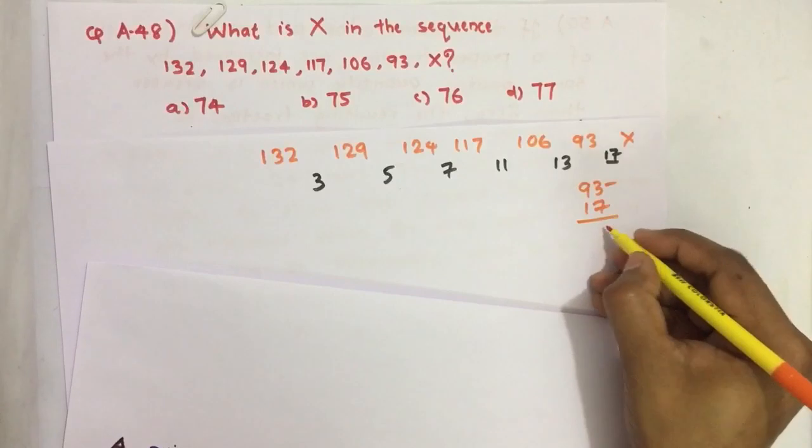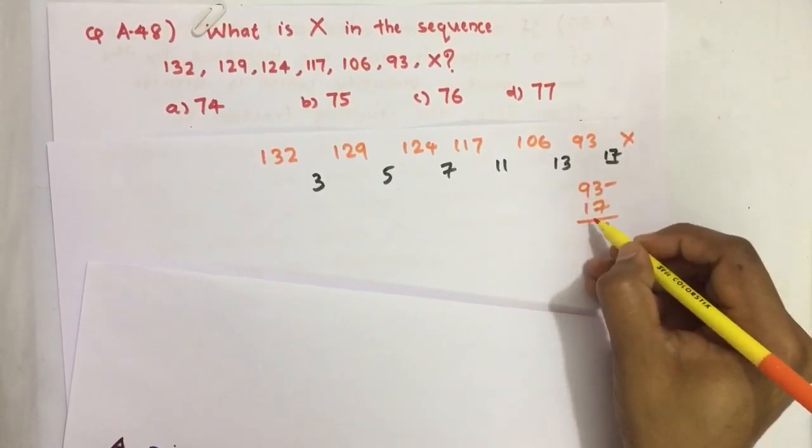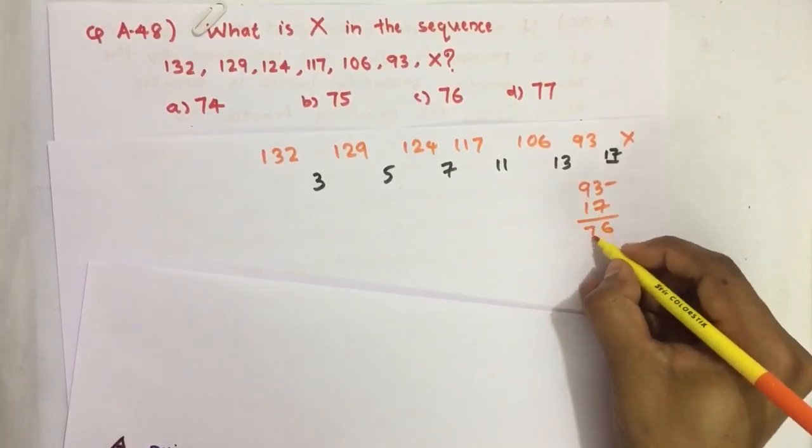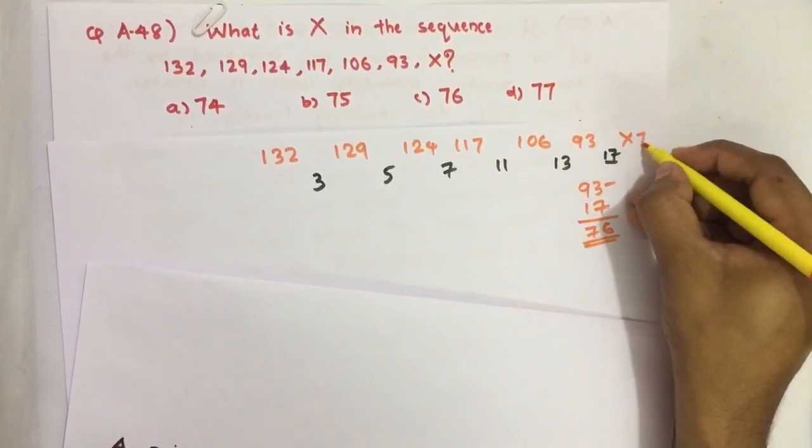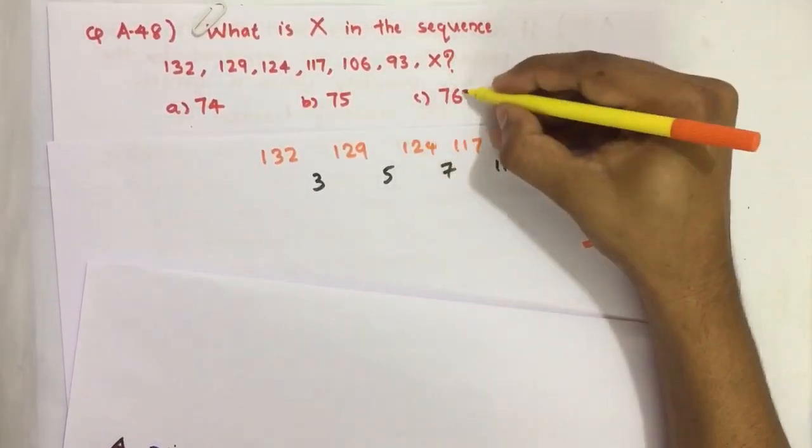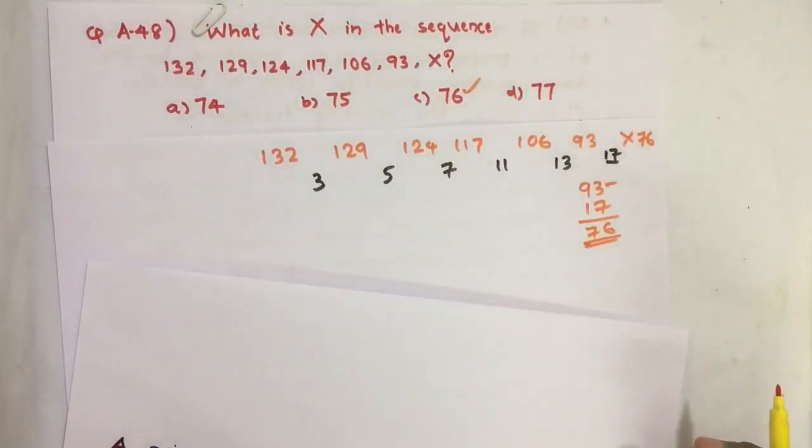93 minus 17, we get 76. Our answer is C. If you have any suggestions, please do comment. Don't forget to like, share, and subscribe our channel. Keep supporting and loving us. Jai Hind!